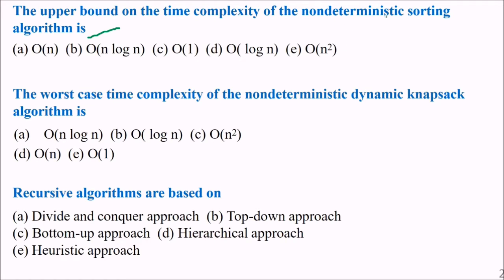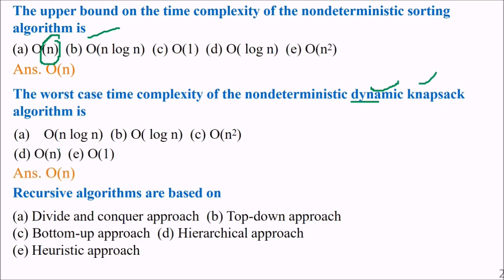Can you tell me the answer? The upper bound is order of n. The worst case time complexity of the non-deterministic dynamic knapsack problem algorithm is order of n for the non-deterministic knapsack algorithm.